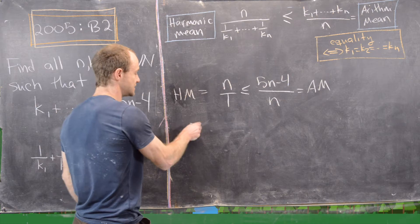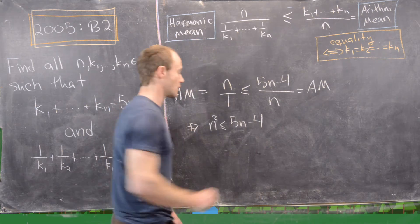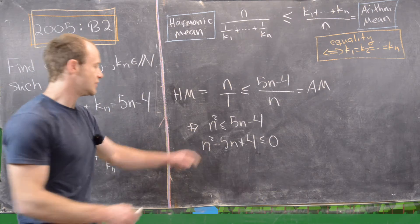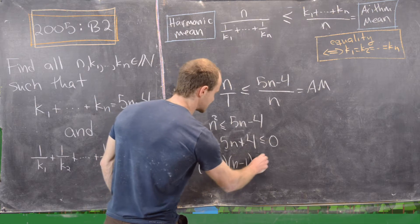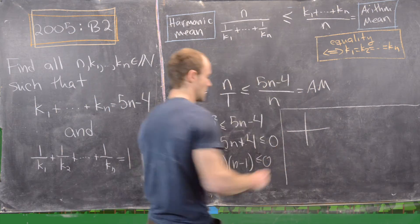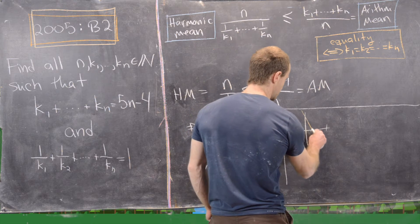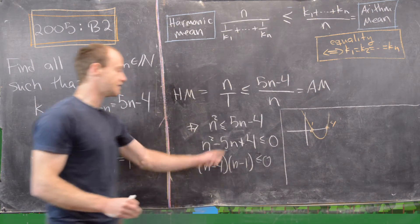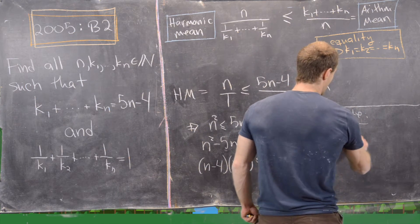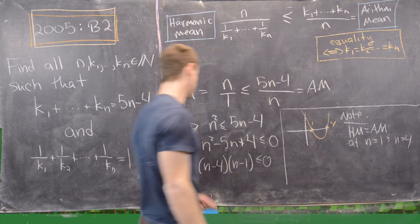In order to have a solution, n must satisfy this inequality, with equality if and only if all kᵢ are equal. Cross-multiplying gives n² ≤ 5n − 4, so n² − 5n + 4 ≤ 0. We can factor this as (n − 4)(n − 1) ≤ 0. This is an upward-facing parabola through n = 1 and n = 4, so we get equality at n = 1 and n = 4.